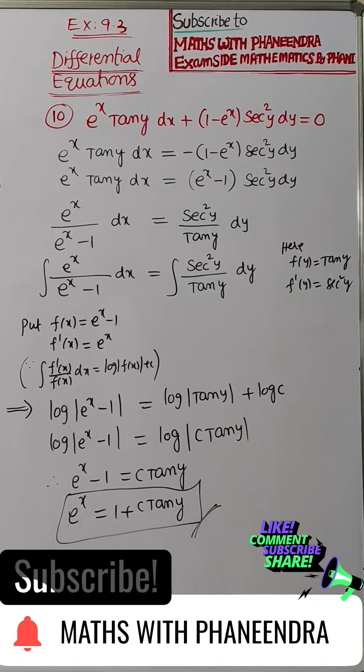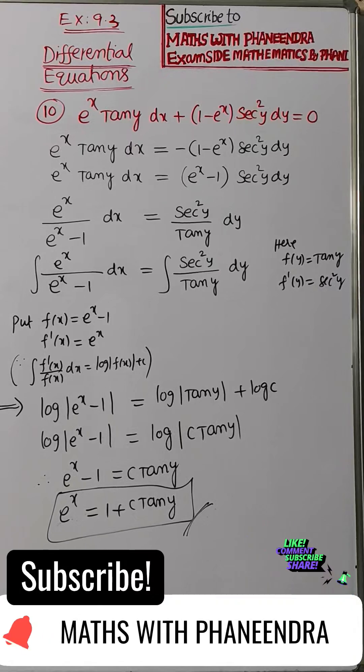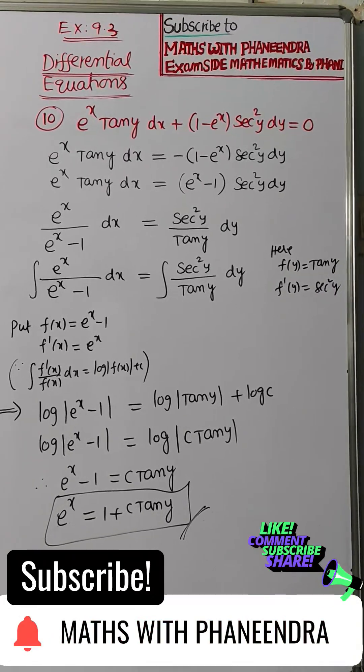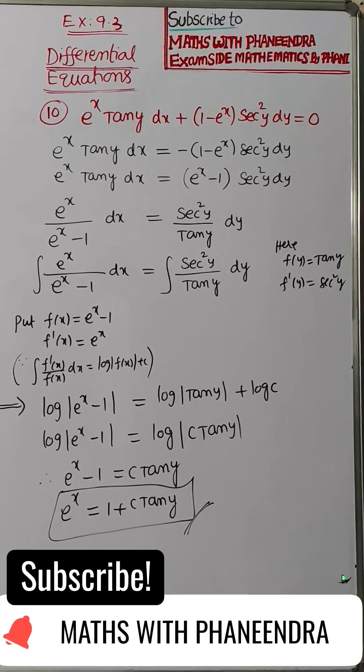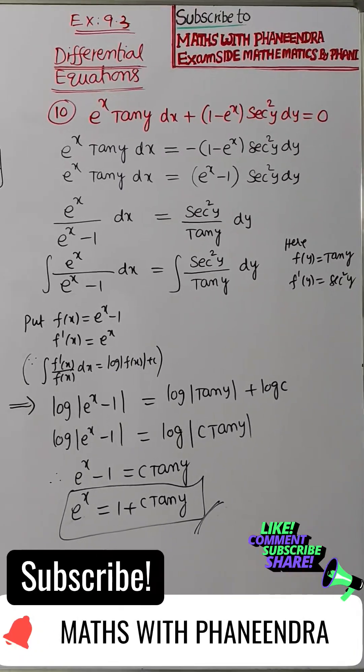So all the x variables bring one side, e power x by e power x minus 1 into dx is equal to secant square y divided by tan y into dy. So after separating the variables,